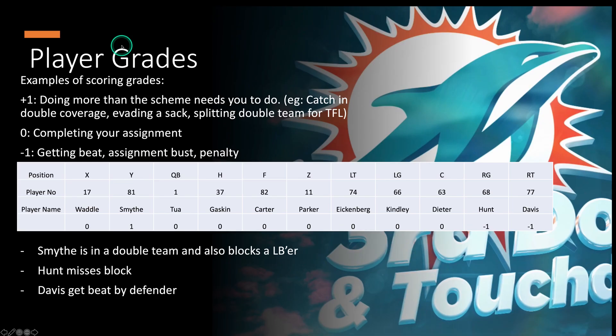Let's quickly look at grades. Smythe, who I spoke about in the double team to linebacker, gets a positive grade — two blocks for the price of one. Unfortunately we have two linemen making mistakes for two different reasons: Hunt gets a negative grade, though I think that's more scheme than his fault; and Davis got beat by the defender, which is even worse because I think that was avoidable. That was the first down — let's have a look at the second down.